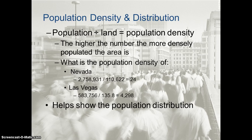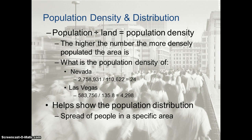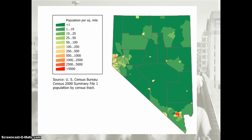Population density helps us understand population distribution. By looking at these two numbers, we see the population distribution of Nevada is not even — in some areas it's as low as 24 people per square mile, or perhaps even lower; in some areas it's as high as 4,000 people per square mile. Distribution is the spread of people in a specific area. Looking at a Census Bureau map of Nevada, most of the state has less than one person per square mile because there are vast parts that are desert.